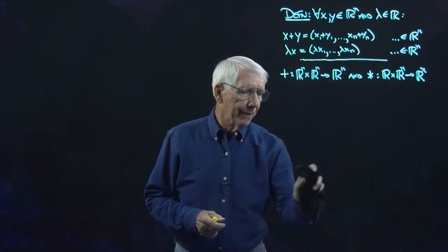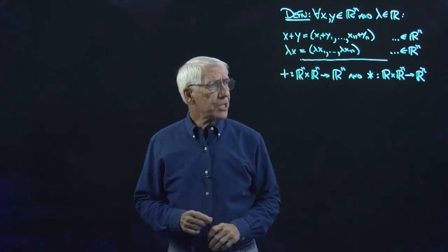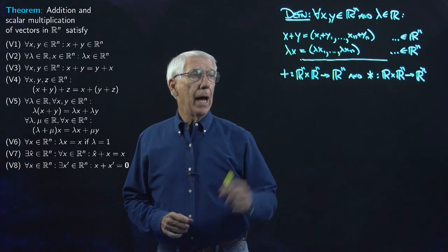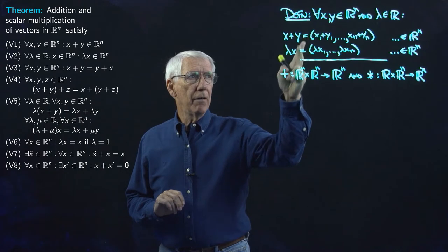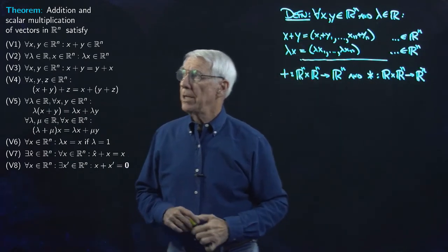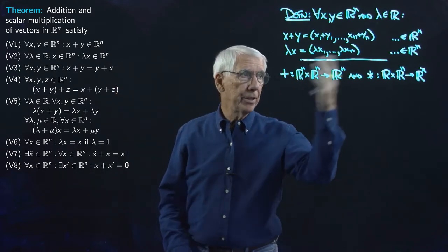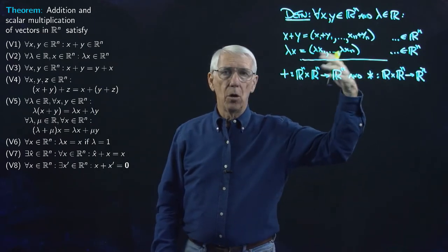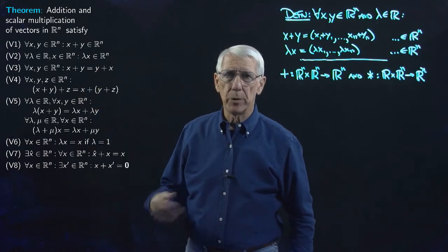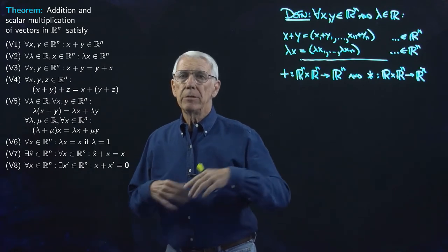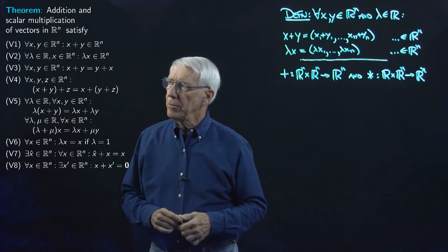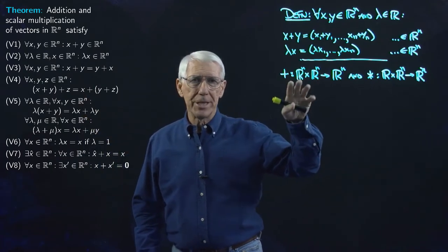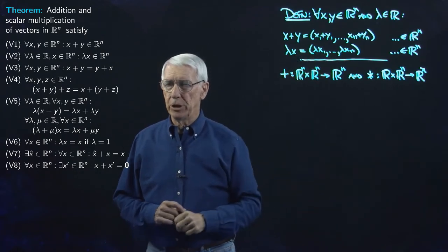Let's look at the theorem we proved that describes eight properties of these two operations. Our theorem said that addition and scalar multiplication — these two functions — satisfy eight properties. The first two, V1 and V2, were simply that Rn is closed under the two operations. Then we have six more properties, and we described the proofs of each of these items. The proofs in every case — all eight of them — were just trivial, simple, one-sentence arguments that come straight from the definitions of the two operations.